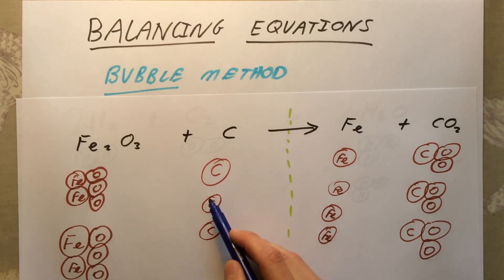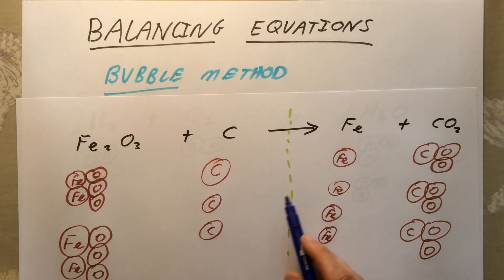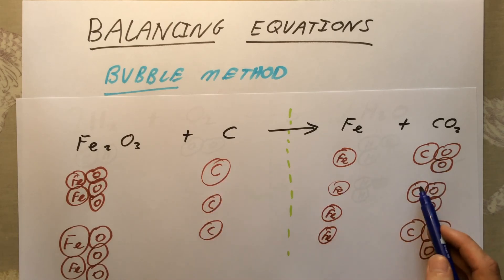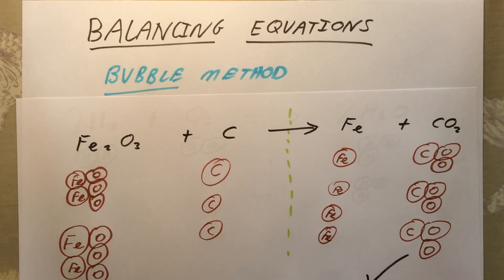Starting with iron: there are now four iron atoms on the left, but only two on the right, so I add two more iron atoms to make four on the right. For carbon: there are three carbon atoms on the right (from three CO₂), but only one carbon on the left, so I add two more carbon atoms to make three on the left. Checking: four iron on each side, six oxygens on each side, three carbons on each side — the equation is balanced.